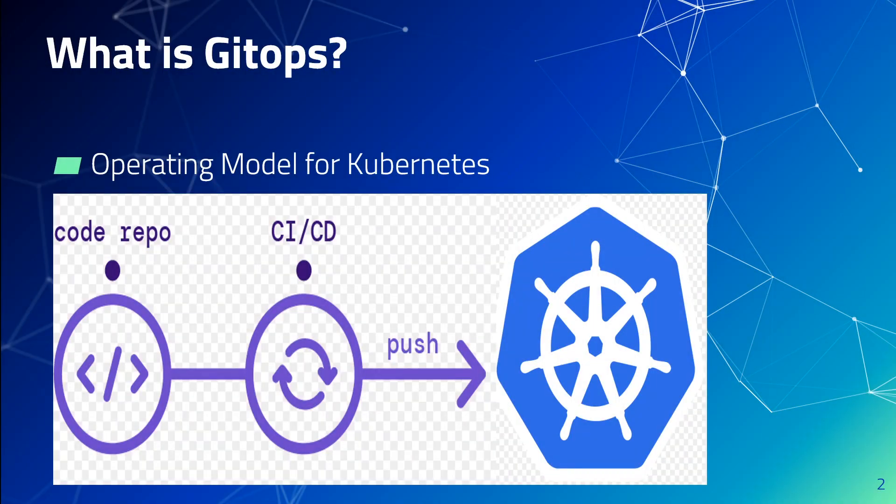GitOps is an operating model for cloud native applications such as Kubernetes, and utilizes a version control system such as Git as a single source of truth. GitOps enables continuous delivery through automated deployment, monitoring, and management by the version control system. GitOps is all about declaratively managing the applications and infrastructure.